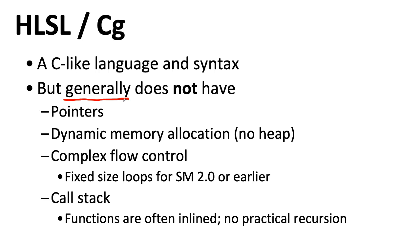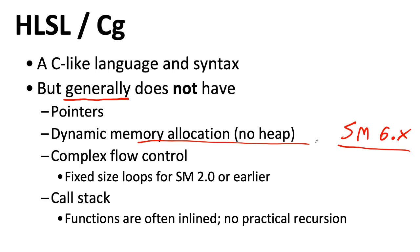I haven't really kept track of what's in Shader Model 6-point-something, but even if you're using one of these newer Shader Models, you generally are writing code that compiles down to something fairly simple. There's no memory — just registers — so there's no malloc because there's no heap. More recent Shader Models do have explicit jump commands, but older ones didn't. You would often run all branches and do conditional assignments to fake branching semantics. Most function calls are actually just inlined, and there's no practical recursion.